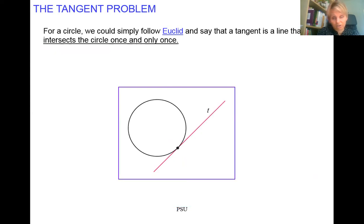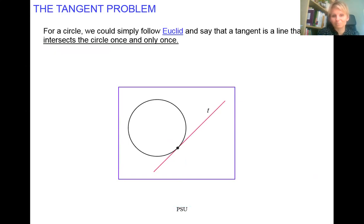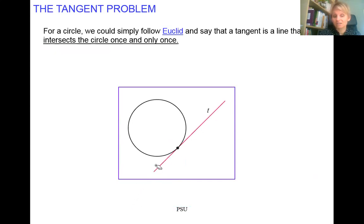We start with the definition of the tangent. The definition was originally stated simply and apparently correctly by Euclid, who said the tangent line is the line that intersects a circle once and only once. This is correct — when you draw a line that intersects a circle once, it is definitely a tangent.